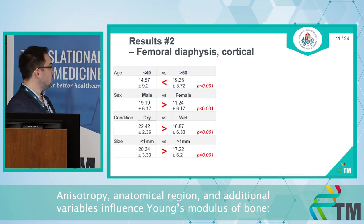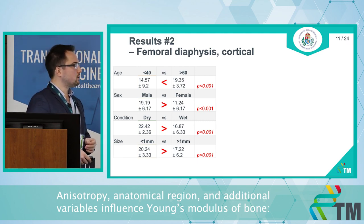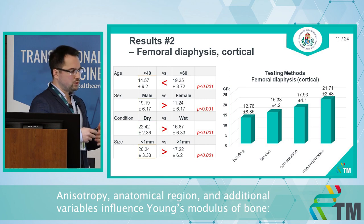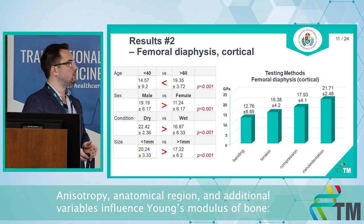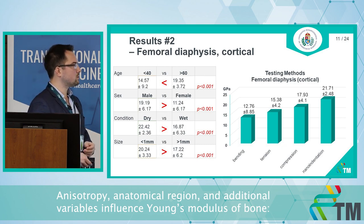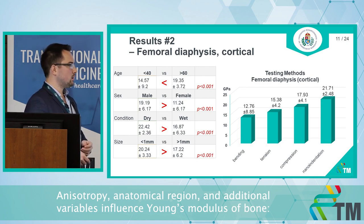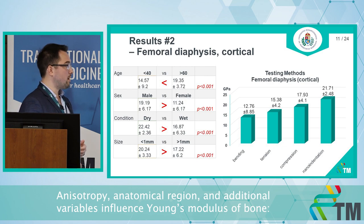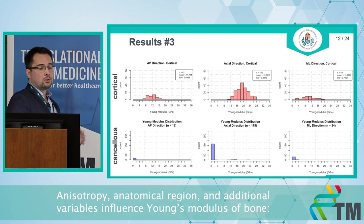We also checked age, sex, condition, and size, with differences shown in the table. When we looked more closely at the diaphysis of the femur using cortical Young's modulus results, we could see that the nanoindentation techniques always produced higher Young's modulus results compared to bending techniques, for example.